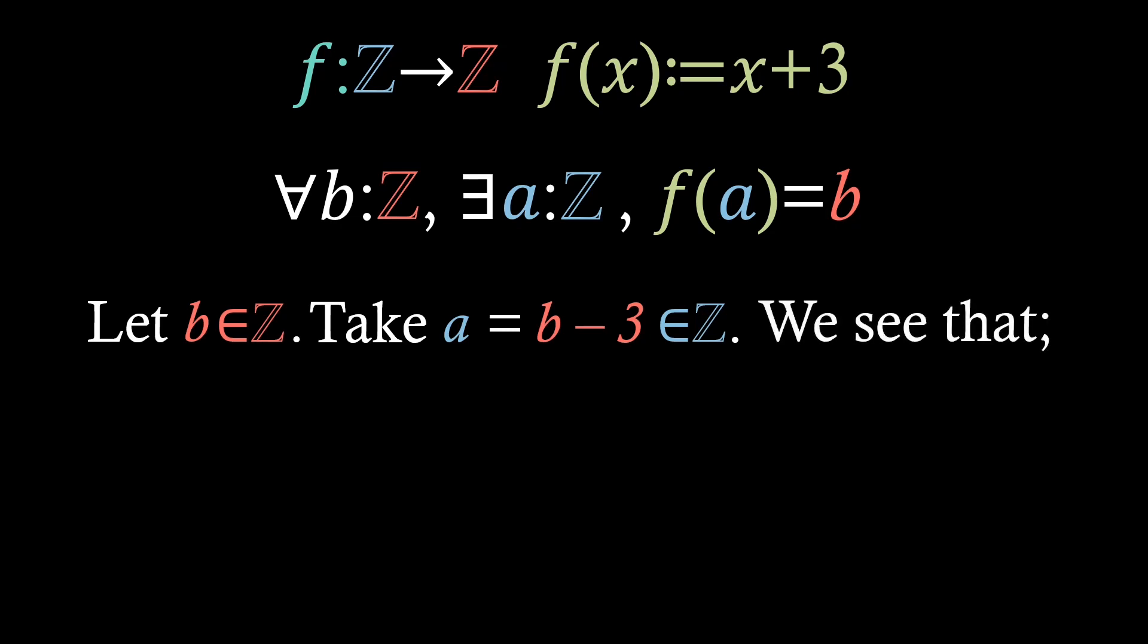we see that taking our original function, f of a equals b, and substituting a for b minus 3, then applying the function rule, just gives us b equals b. So, we've shown that this function is surjective.